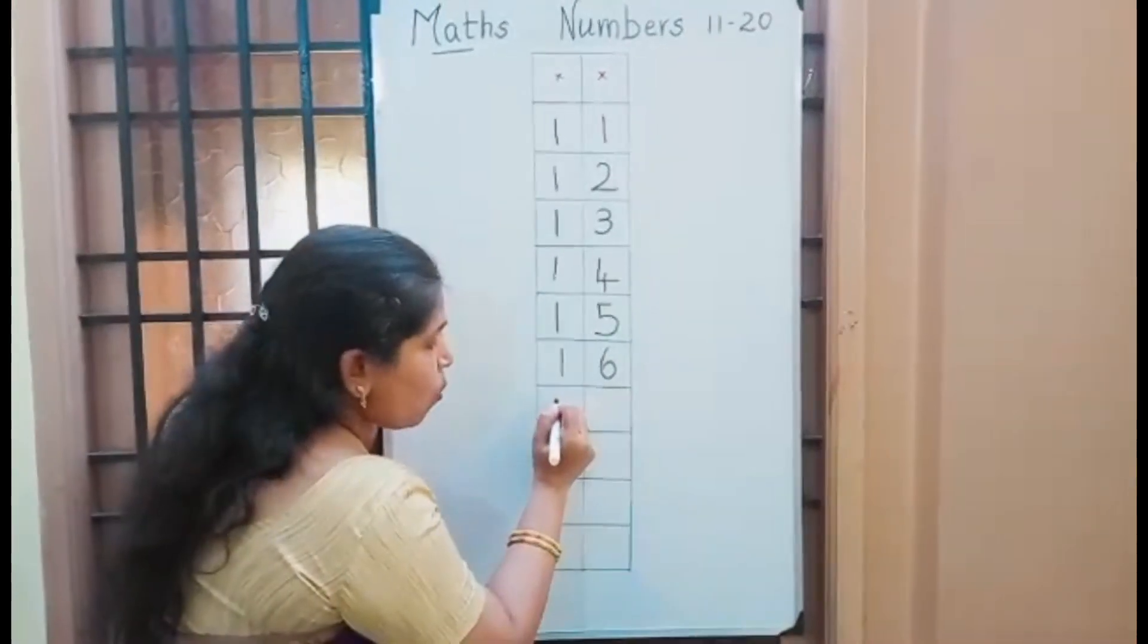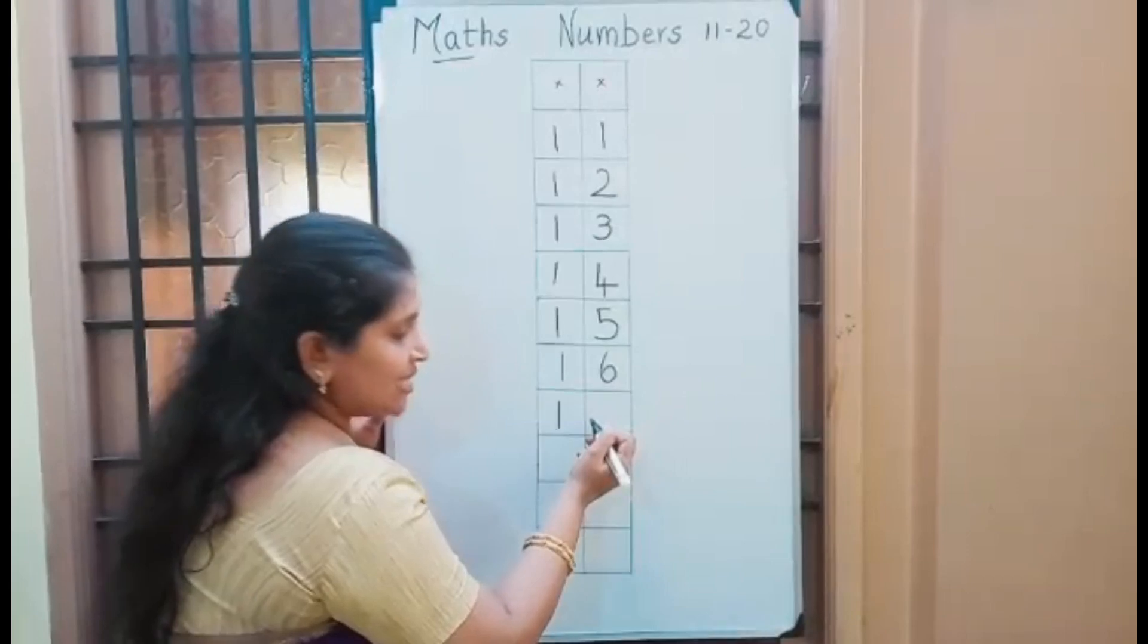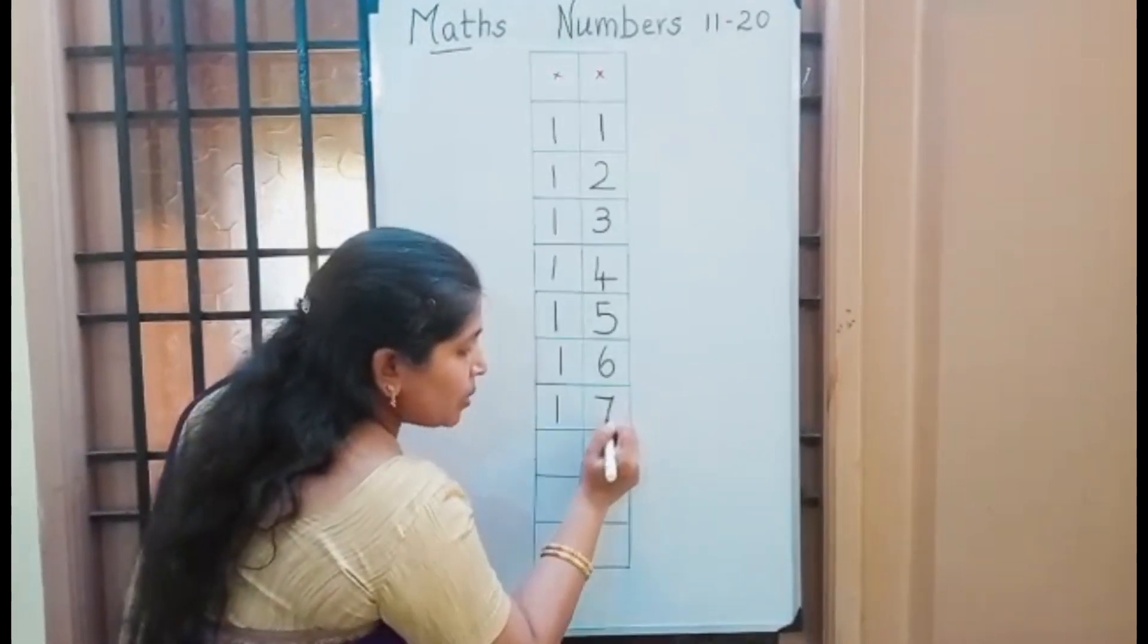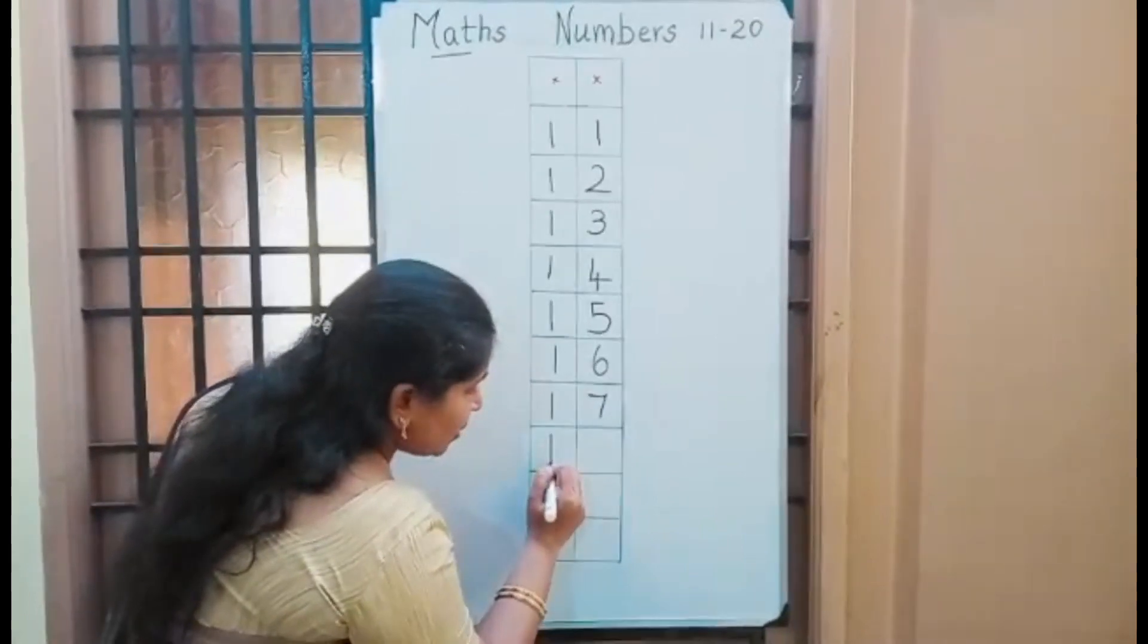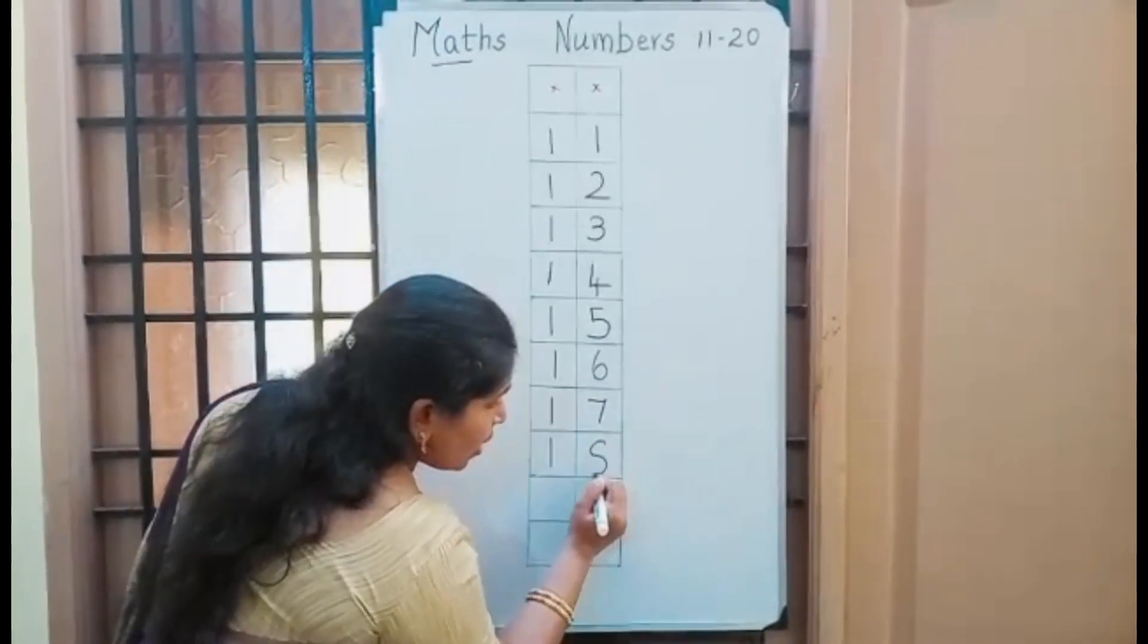1, 7, 17: 1 in 10s place, 7 in 1s place. 1, 8, 18: 1 in 10s place, 8 in 1s place.